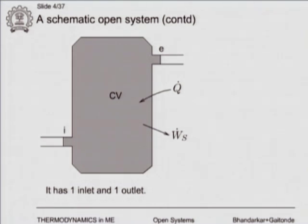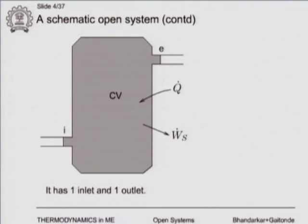We are going to analyze a very simple system — a control volume with just one inlet and one outlet. The shaded area is the control volume, named CV. Port I is the inlet and port E is the outlet. We also show heat transfer q_dot and work transfer w_dot.